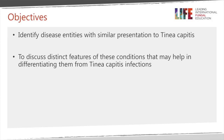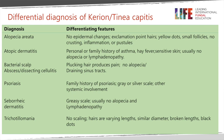We will now cover the differential diagnosis of tinea capitis. The objectives are: to identify disease entities with a similar presentation to tinea capitis, and to discuss distinct features that help differentiate them. Conditions that mimic tinea capitis include alopecia areata, some forms of atopic dermatitis, bacterial scalp abscesses or dissecting cellulitis, psoriasis, seborrheic dermatitis, and trichotillomania.